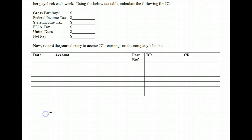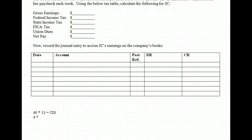For the first 40 hours, she's going to make $13 per hour. So you take 40 hours times the $13 rate and get $520. On top of that, she gets overtime pay. She goes 4 hours into overtime this week, and we multiply that by the overtime rate. Her hourly rate is $13 per hour and she gets 1.5 times that in overtime, so 4 hours times $19.50 per hour gives us $78 in overtime. Her gross earnings would simply be $520 plus $78, which gives us total earnings of $598.